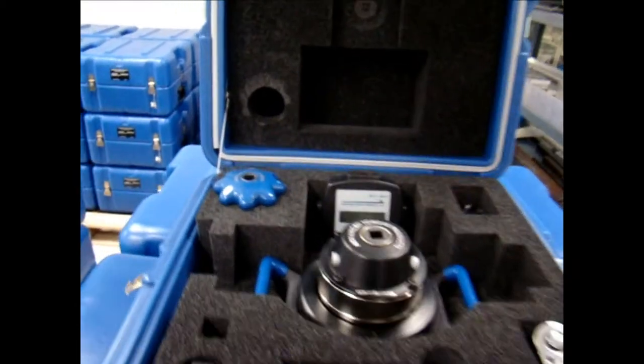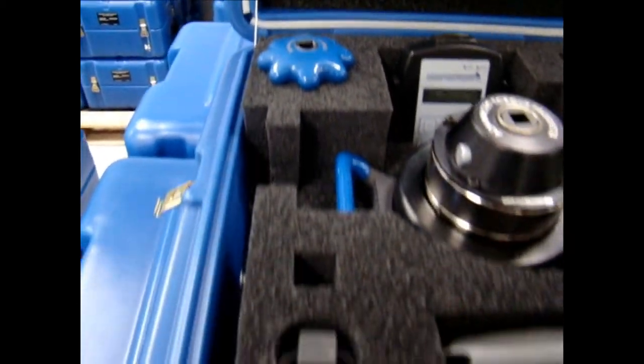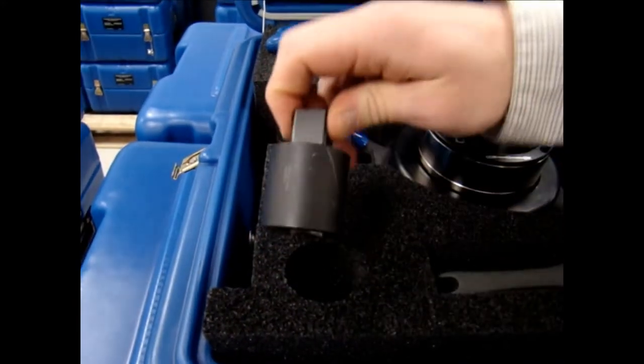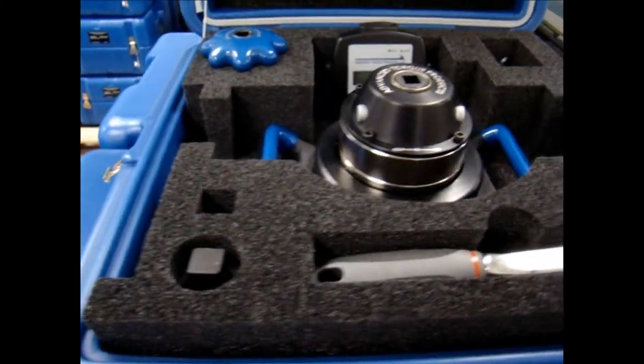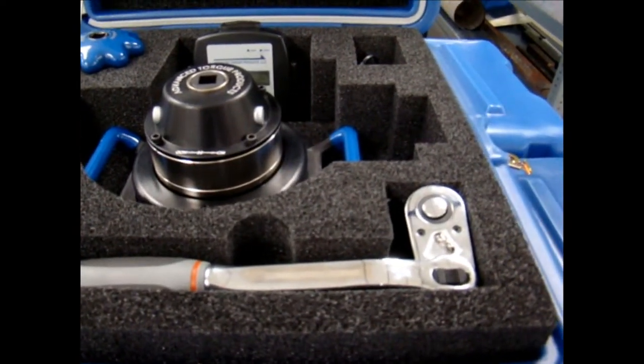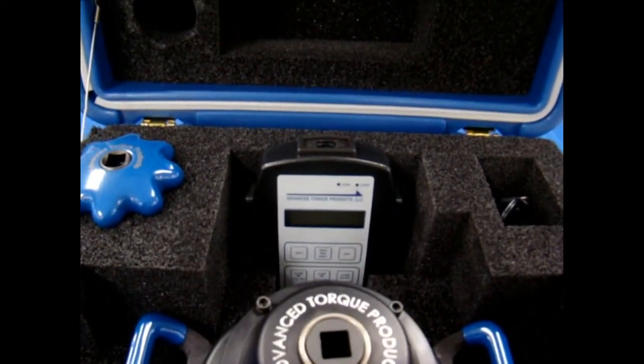A typical Advanced Torque Products kit will contain a speed knob, some kind of output (most likely a drive bar or socket), an input ratchet, a torque multiplier, and a digital display with cable and charger.